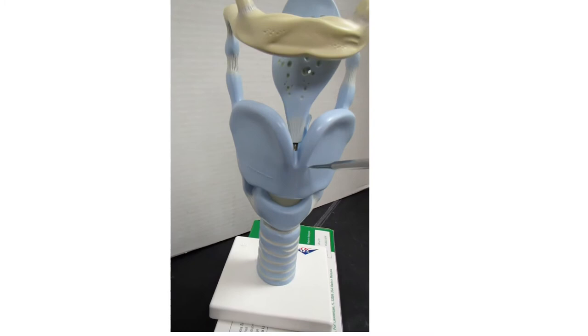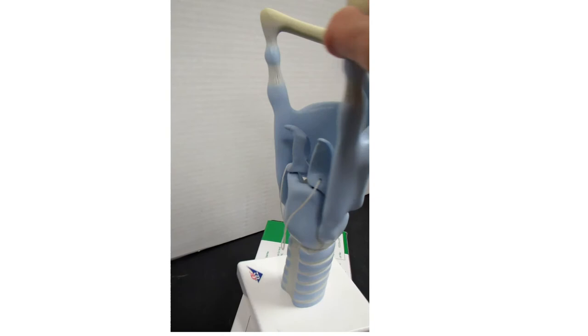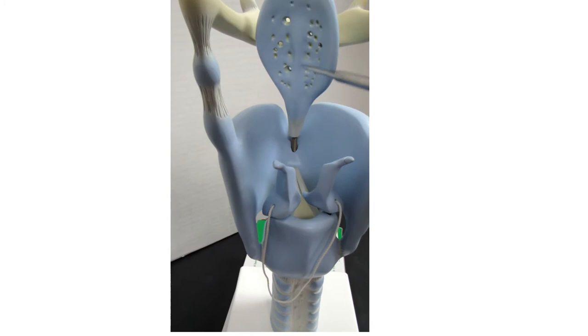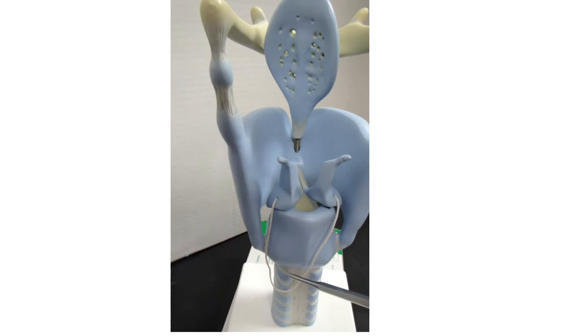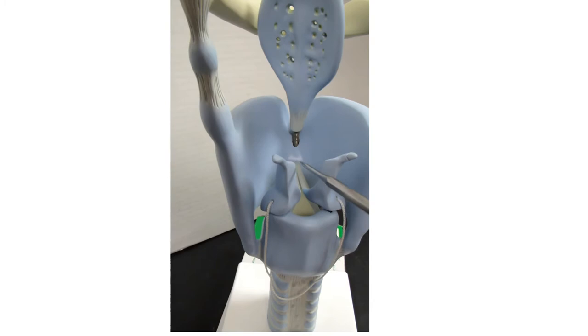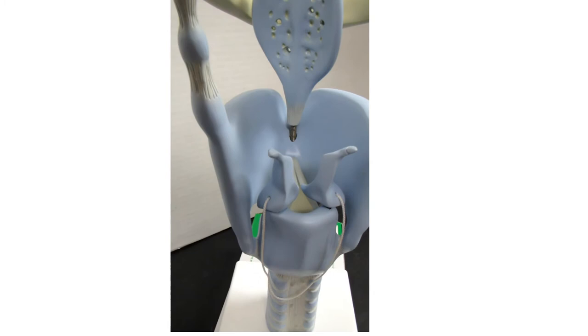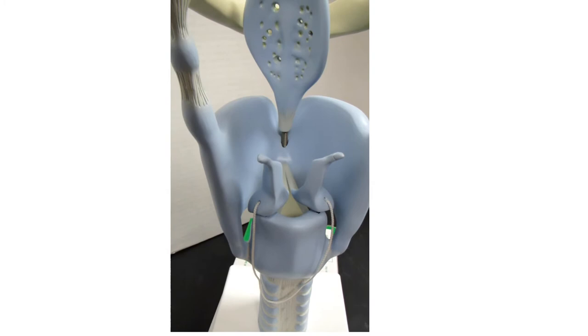Now let's take a look at the model from the posterior view. You can see the epiglottis again, the posterior side of the thyroid cartilage, and the posterior side of the cricoid cartilage. You can also see that there are one, two, three, or four more pieces of cartilage here—these structures that look like crooked fingers.